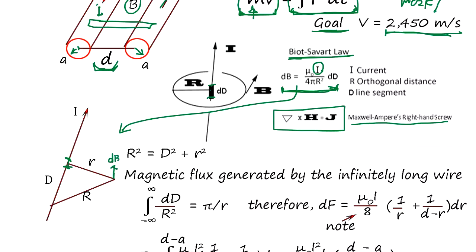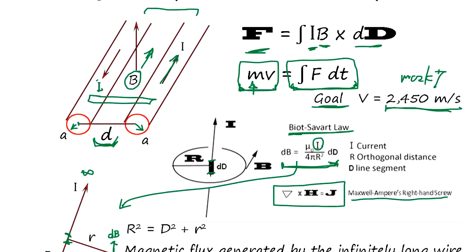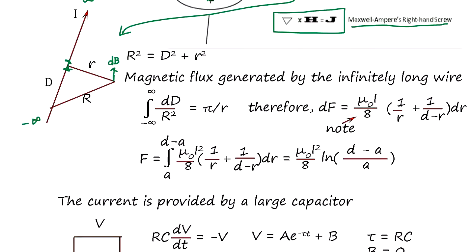From the Biot-Savart equation, each line segment dL generates a magnetic field dB. We take the integral from negative infinity to infinity, assuming the barrel is long enough compared to D. Using this approximation, after integrating — where R squared plus D squared appears under the radical — the result simplifies to pi over R.